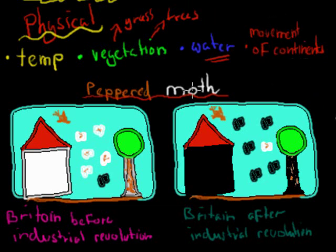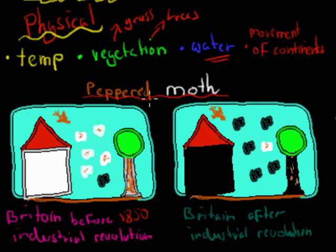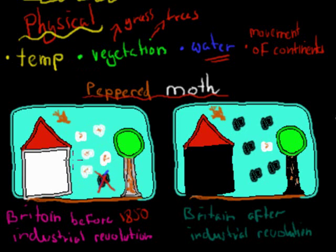An example is the peppered moth. This was actually in Britain. Before the Industrial Revolution — roughly the 1850s — in the landscape in Britain you had these moths, and they were white in color with a bit of brown dots. The same species also had a black version, but there weren't many black ones around. The reason why is that birds were eating the moths, and it was really easy to see the black ones because they stood out — they'd just get eaten. But the white ones could blend in, so nothing would happen to them, meaning the majority of the moths were white.